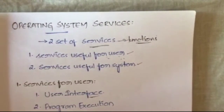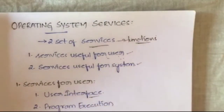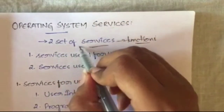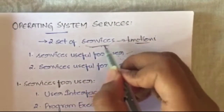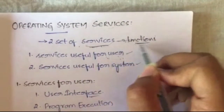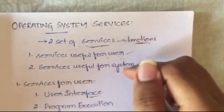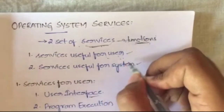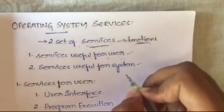In the previous video we learned about system calls in operating systems. In this video we are going to learn about the different services of the operating system. The operating system has two sets of services. Services of the operating system are nothing but the functions — the features that an operating system can provide us.